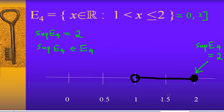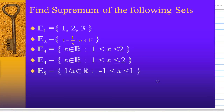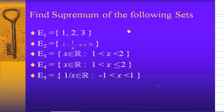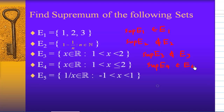In summary, looking at our five examples: the supremum of E1 is in E1; the supremum of E2 is not in E2; the supremum of E3 does not belong to E3; the supremum of E4 belongs to E4; and the supremum of E5 does not exist. I hope this video helped you to visualize the supremum of a set. That's the end of the recording — see you next time.